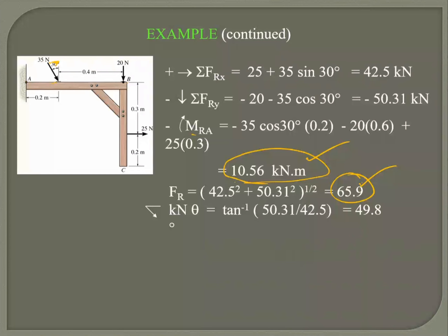A student asks: what about the horizontal component of the 35 Newton force? If I have two components — this one and this one — the horizontal component applies along a line with no perpendicular distance from A. So the horizontal component does not create any moment at A.